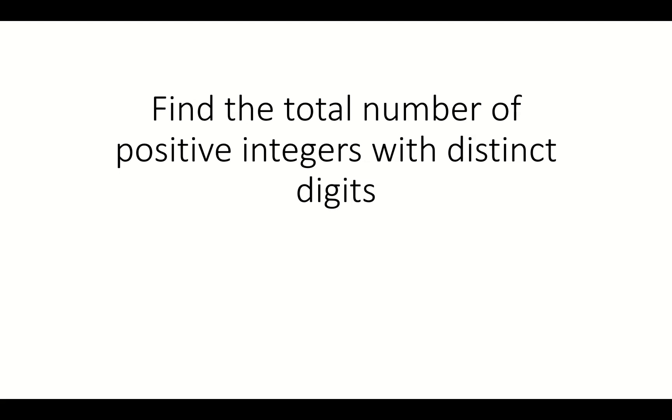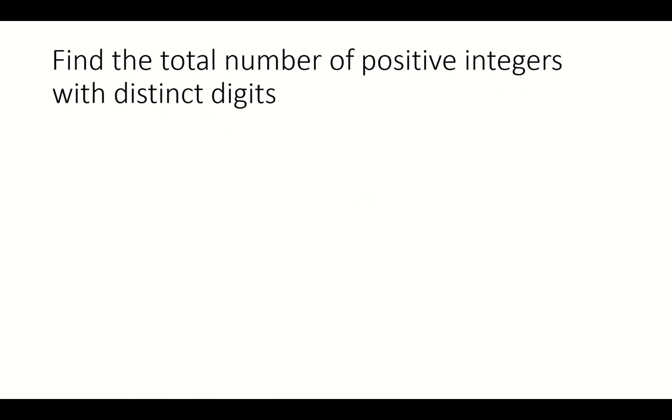Let's find the total number of positive integers with distinct digits. So let's think about it. All the digits are between 0 and 9, so that makes 10 digits. We're going to go all the way from 1-digit numbers to 10-digit numbers to see how many distinct numbers there are.